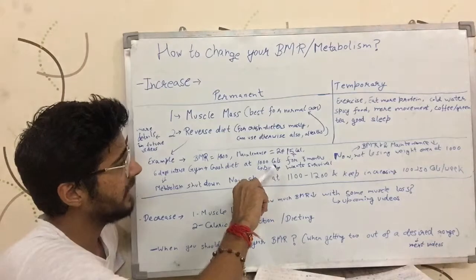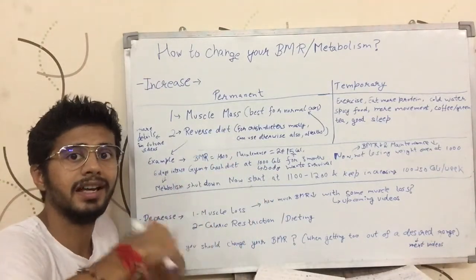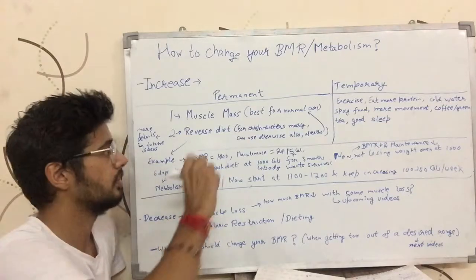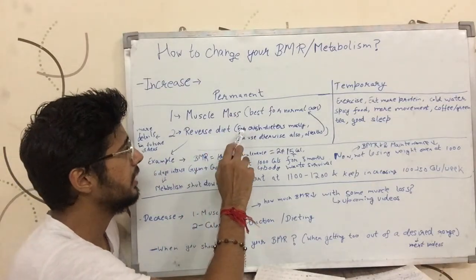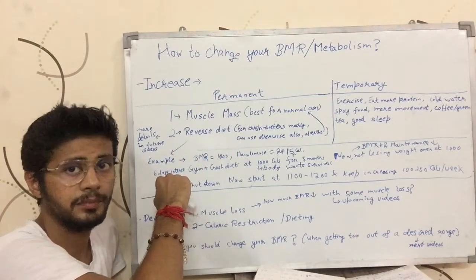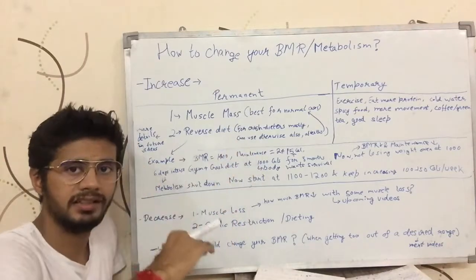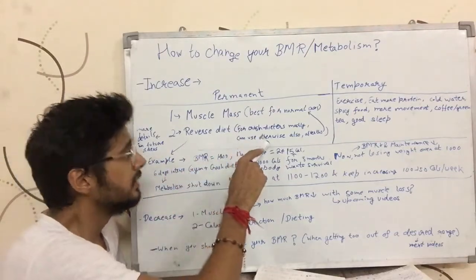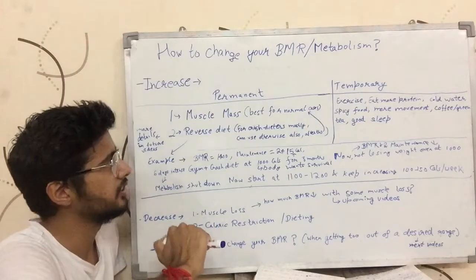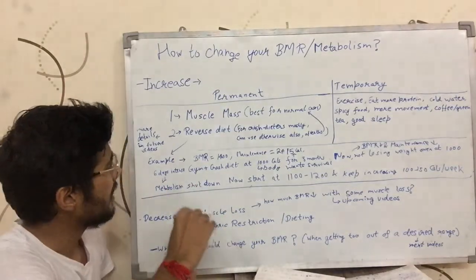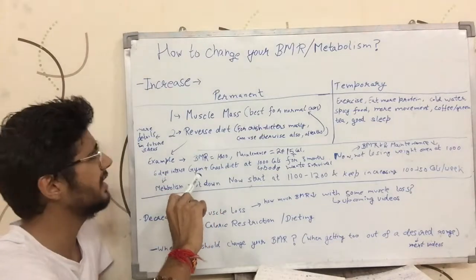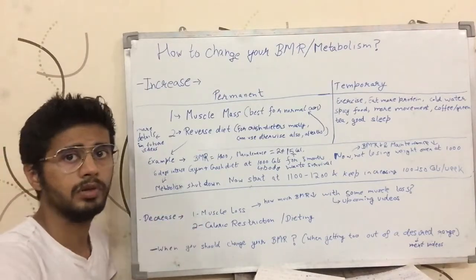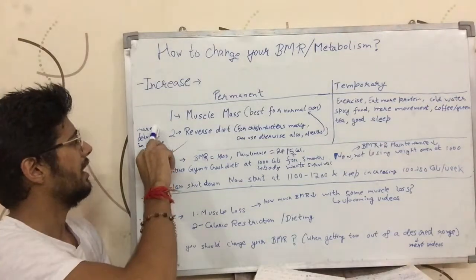This process is called reverse dieting. You reverse the diet and come back to where you wanted to eat. So basically, for this girl, she should reverse diet first to increase her maintenance, and once she has come back to her normal maintenance of around 2400 calories when working out six days intensely in the gym, then she should try to increase her muscle mass just like the normal case. So this is a brief about reverse dieting — you keep increasing the calories so that your maintenance and BMR increase and you come to a normal decent level.